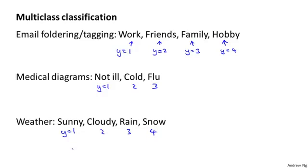So in all of these examples, y can take on a small number of discrete values, maybe 1 to 3, 1 to 4, and so on. And these are multiclass classification problems. By the way, it doesn't really matter whether we index this as 0, 1, 2, 3, or as 1, 2, 3, 4. I tend to index my classes starting from 1 rather than starting from 0, but either way works.